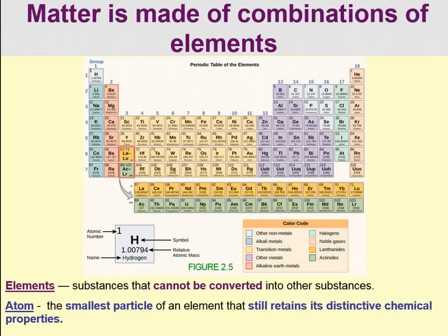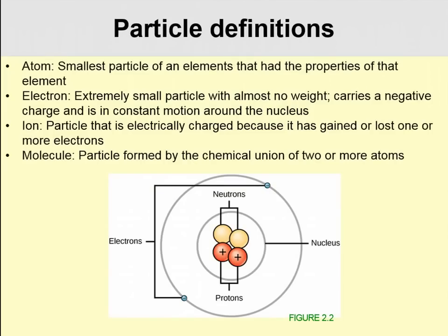First off, matter is made of a combination of elements. It's important to know a couple of basic definitions here. Elements are substances that cannot be converted into other substances. An atom is the smallest particle of that element that still retains its distinctive chemical properties. We're going to be using these terms extensively throughout the class.